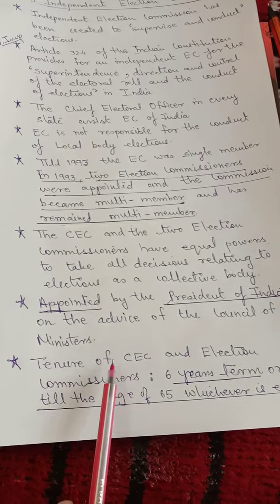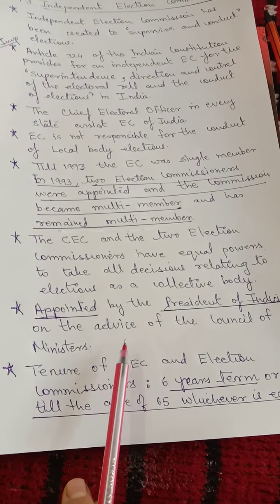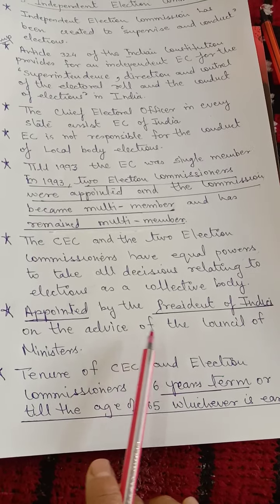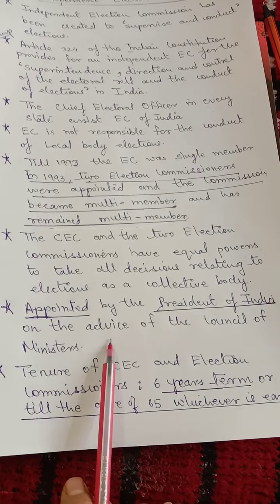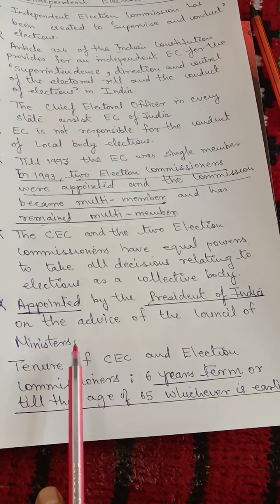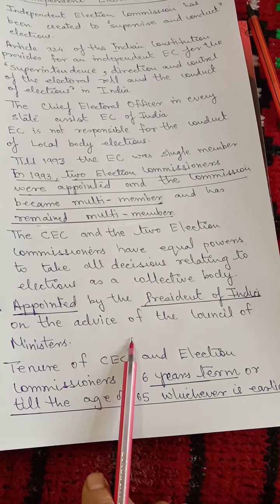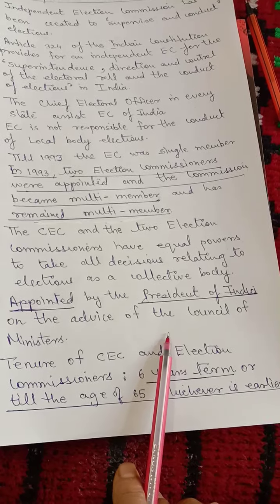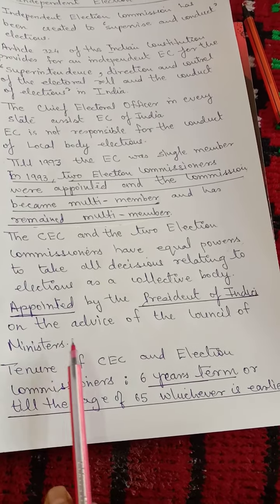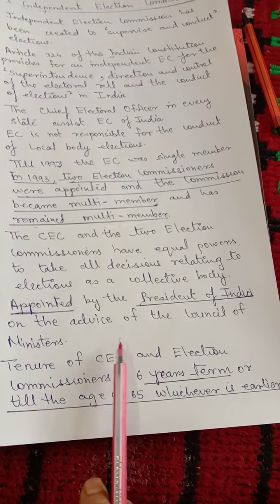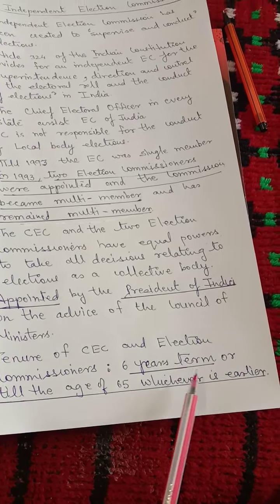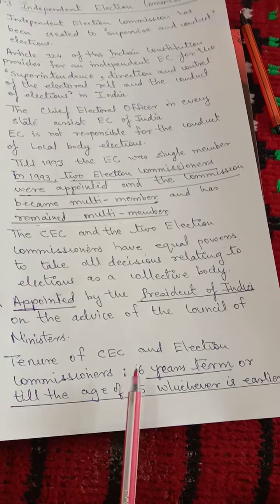Now, what is the tenure of the Election Commission — the Chief Election Commissioner and Election Commissioners? The Constitution ensures their tenure. They are appointed for a 6-year term or continue till the age of 65, whichever is earlier.